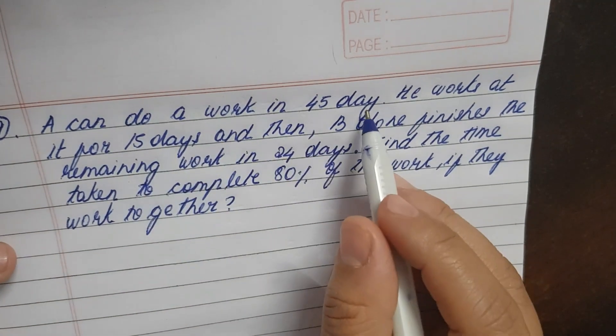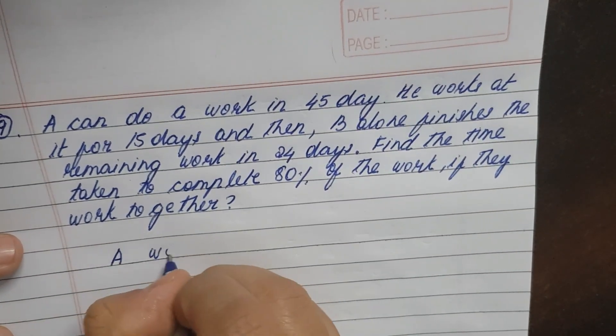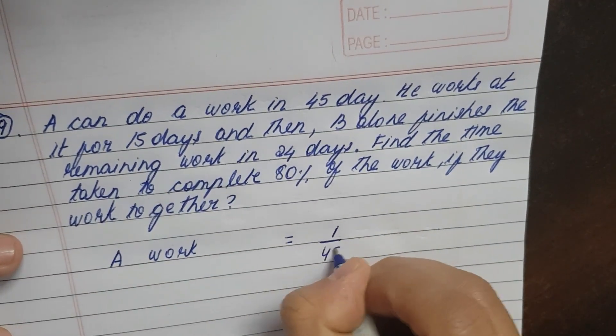A can do a work in 45 days. So A's work is equal to 1 by 45.